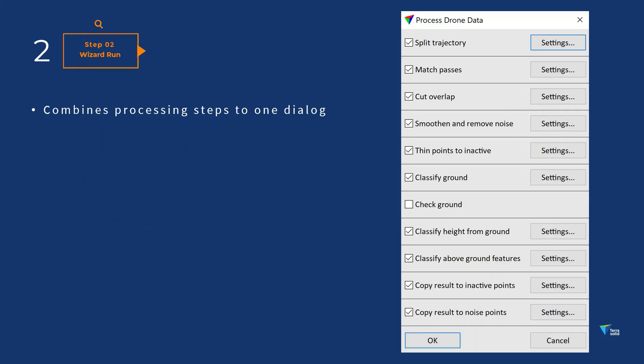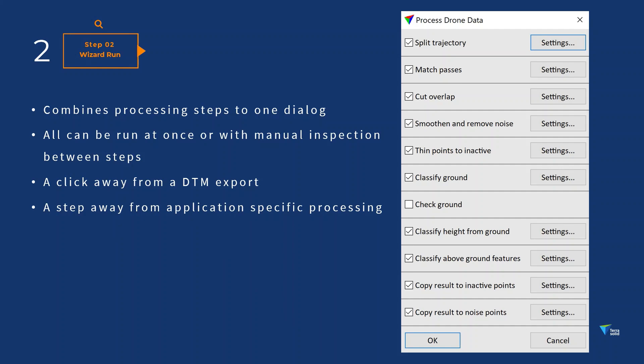Step 2 combines processing steps into one dialog. You can run all at once or interrupt for manual inspection. First, data calibration and matching are performed to improve data accuracy. This is followed by ground classification and finally above-ground feature extraction.